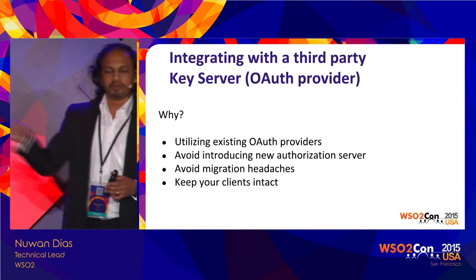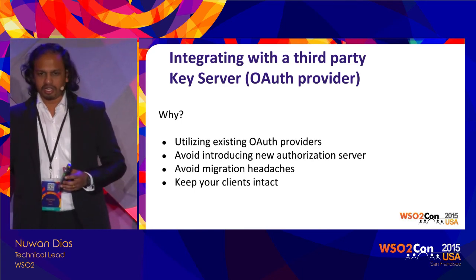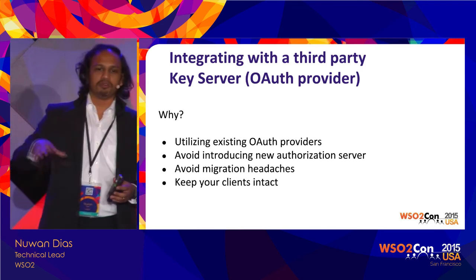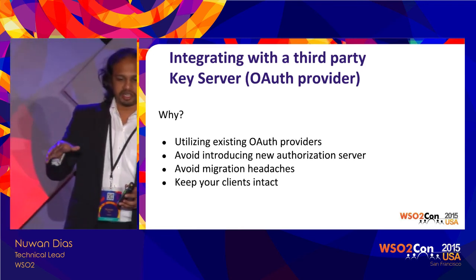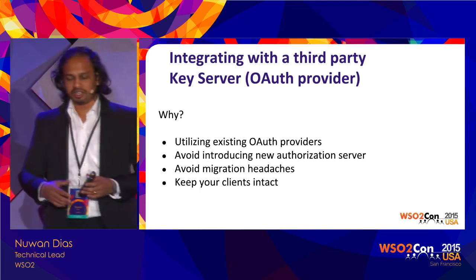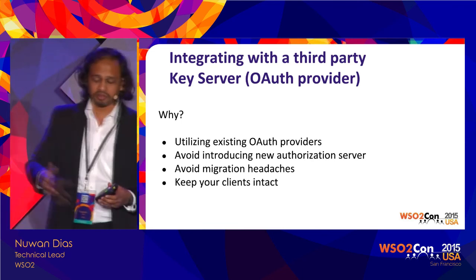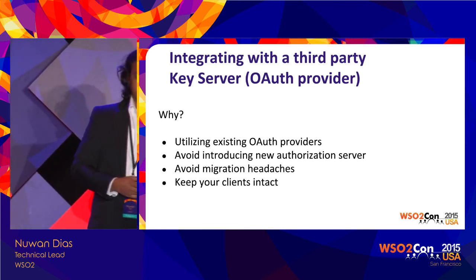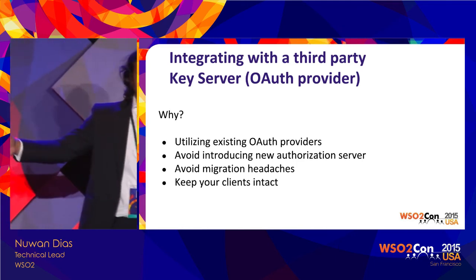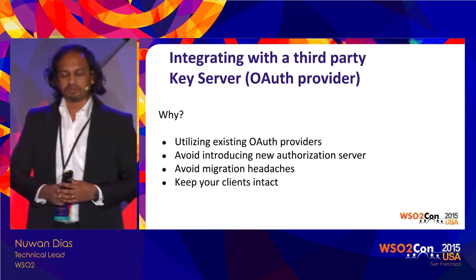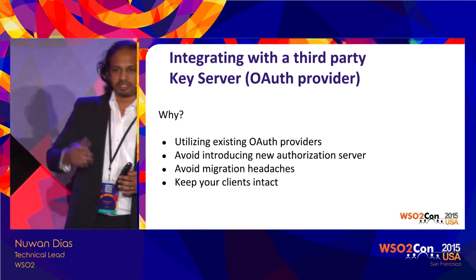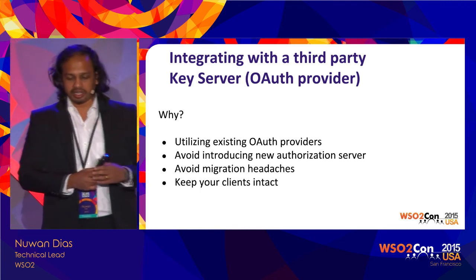In the last feature release of the API Manager we introduced the capability of plugging in an external OAuth server. If you already have an OAuth provider in your organization, you could utilize that instead of bringing in the WSO2 Identity Server or WSO2 API Manager's Key Manager. Bringing in an authorization server requires a lot of organizational approvals, so using what you already have saves significant headaches. It also avoids the need for migrations — if you already have applications registered in your system, you could use those, keeping your clients intact without changing their code.